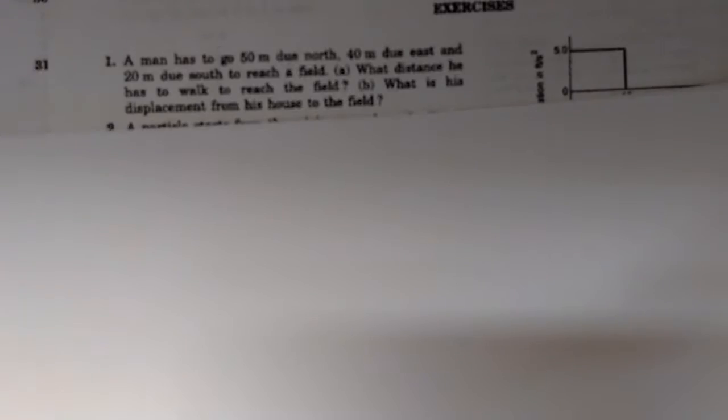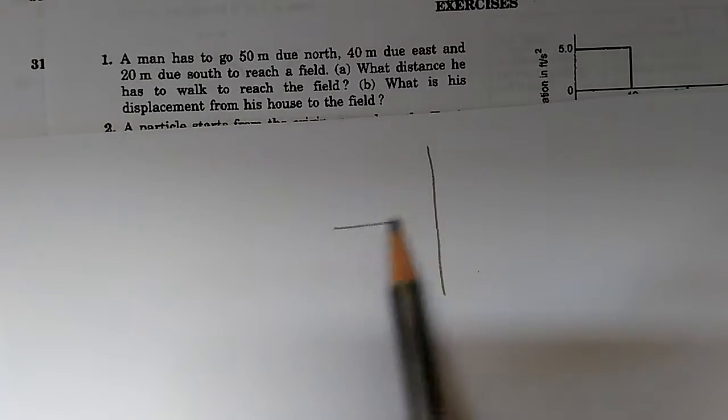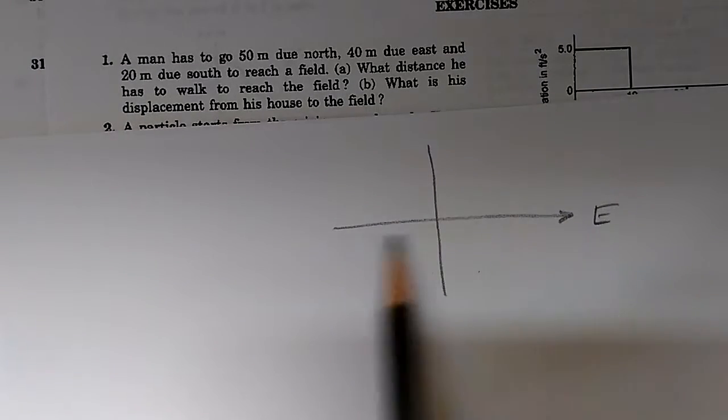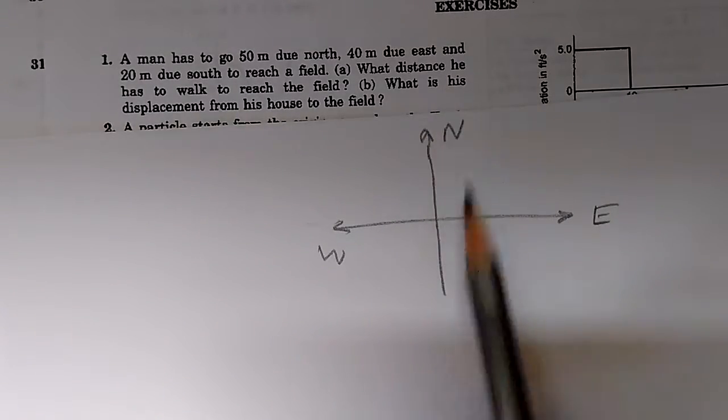First part A. Whenever we need to solve this kind of problem, we draw a direction. In the direction, the typical convention is this is east direction, this is west direction, this is north, and this is south.